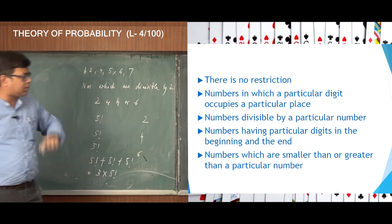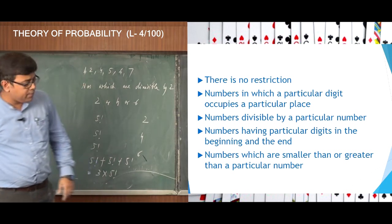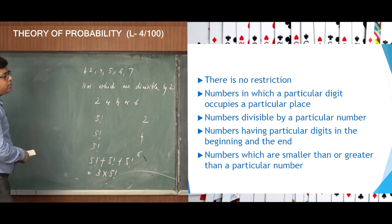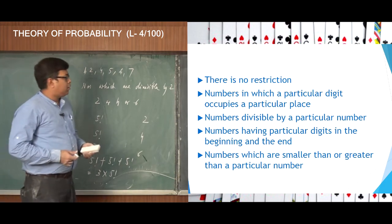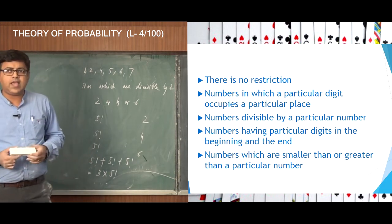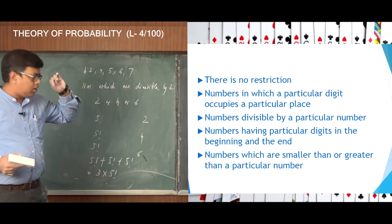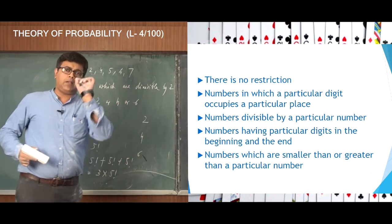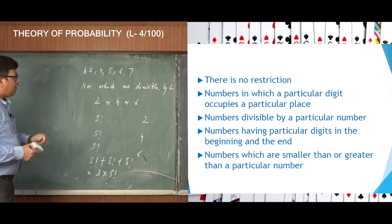Now the fourth case: numbers having a particular digit in the beginning and at the end. When we say that, we fix a particular number at the beginning and a particular number at the end.